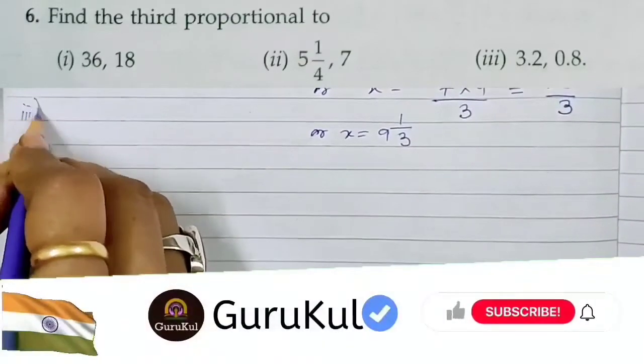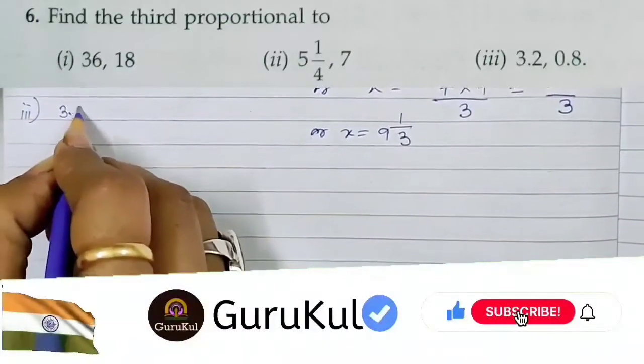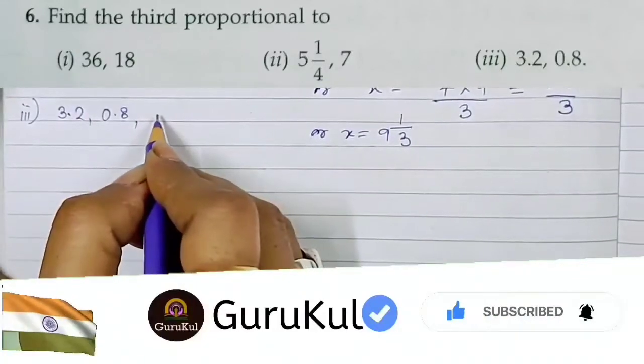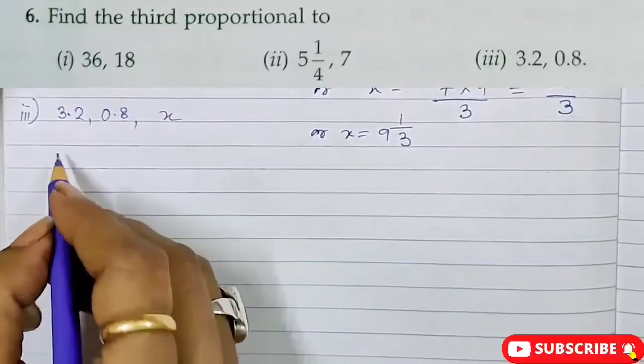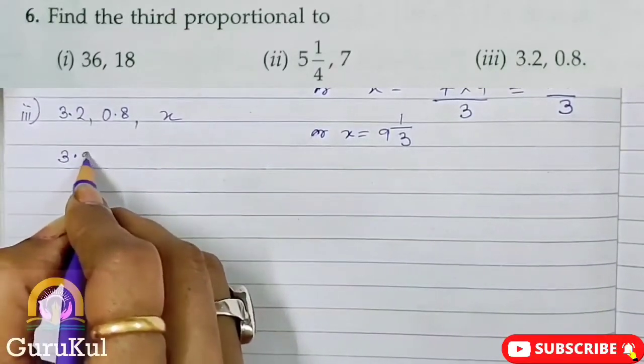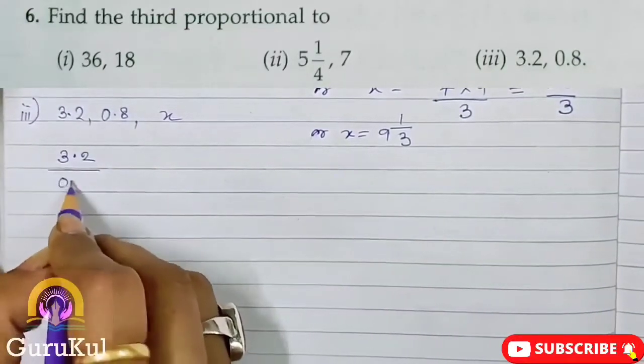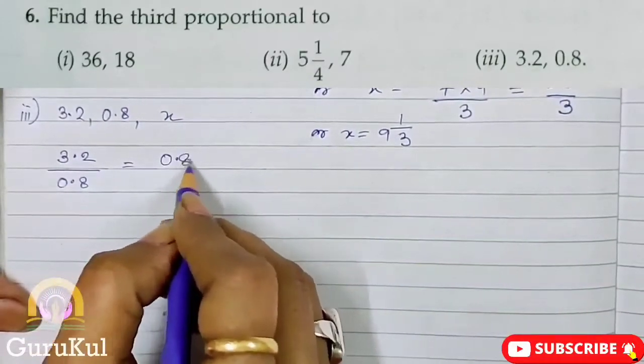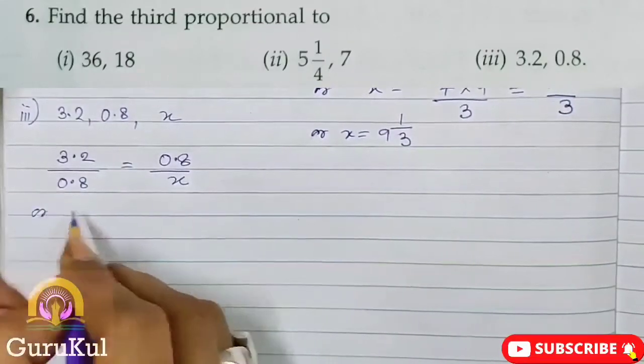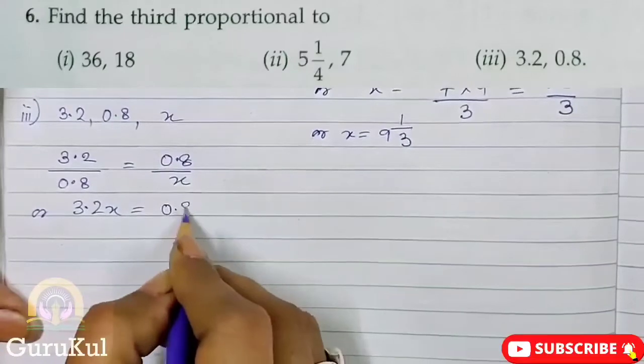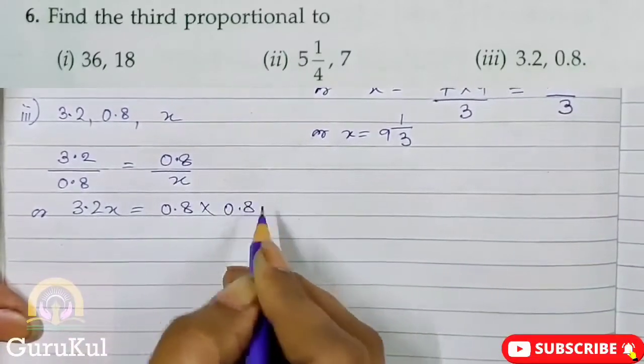The third part of this sum is 3.2, 0.8. So the third proportion is X. So here we have 3.2 by 0.8 is equal to 0.8 by X. Or, 3.2X is equal to 0.8 into 0.8.